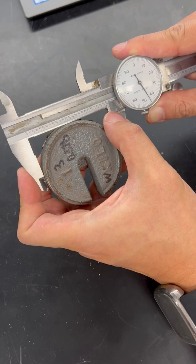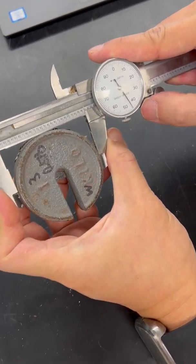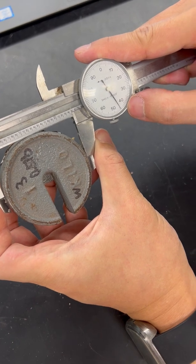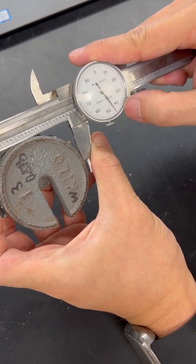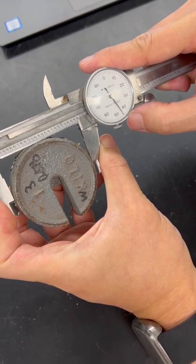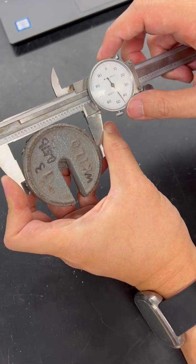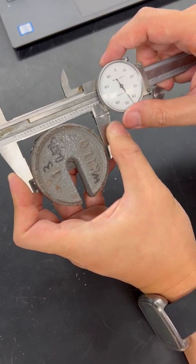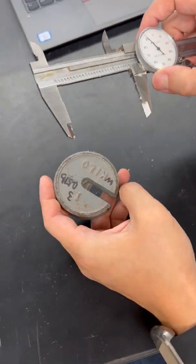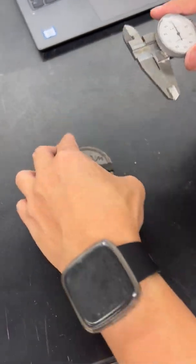What we are reading now is 45, so 45 times 0.001 inch gives us 0.045 inch. To read this now, we get 2.445 inches.